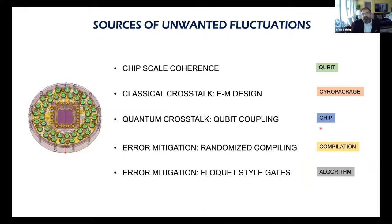The talk covers: first, having reliable coherent devices so you can separate materials issues from design issues; second, the classical electromagnetic design of the cryo package; third, quantum crosstalk in terms of how qubits couple to each other; and finally, how to diagnose and mitigate such errors — including compiling quantum circuits differently and executing gates in ways that account for noise.